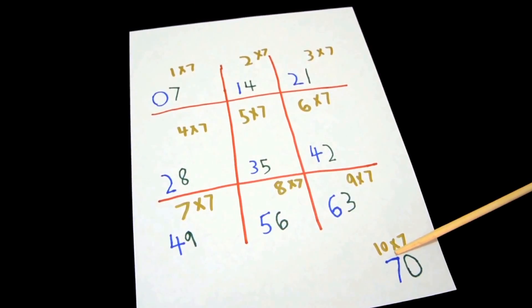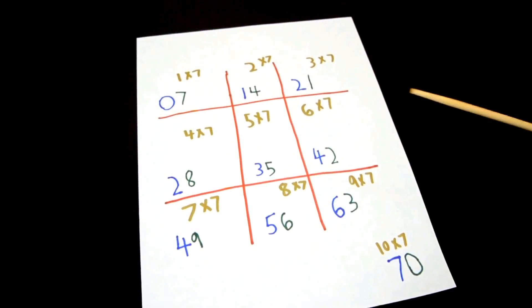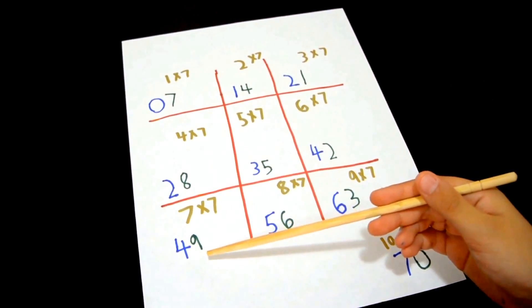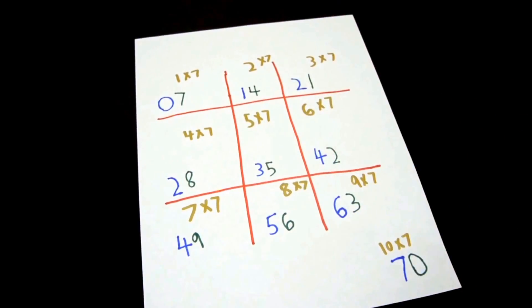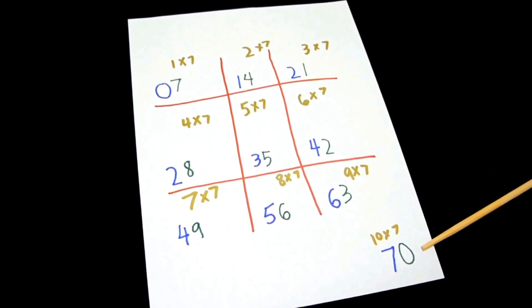Then don't forget to write the 7 here. Next, write the numbers 1 to 9 from top to bottom and from right to left. Then put a 0 here.